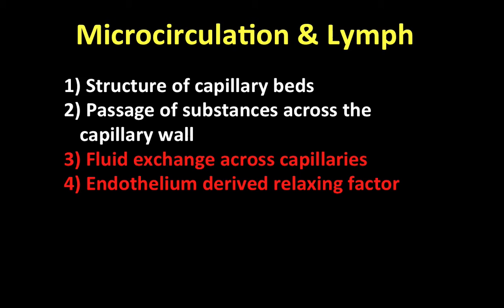Regarding passage of substances, we have lipid-soluble substances, small water-soluble substances, and large water-soluble substances. Lipid-soluble substances such as O2 and CO2 are able to go through simple diffusion. The smaller water-soluble substances like water, glucose, and amino acids are able to get in using those clefts. We also talked about the blood-brain barrier, sinusoids located in the liver and intestine, and pinocytosis with the large water-soluble substances.